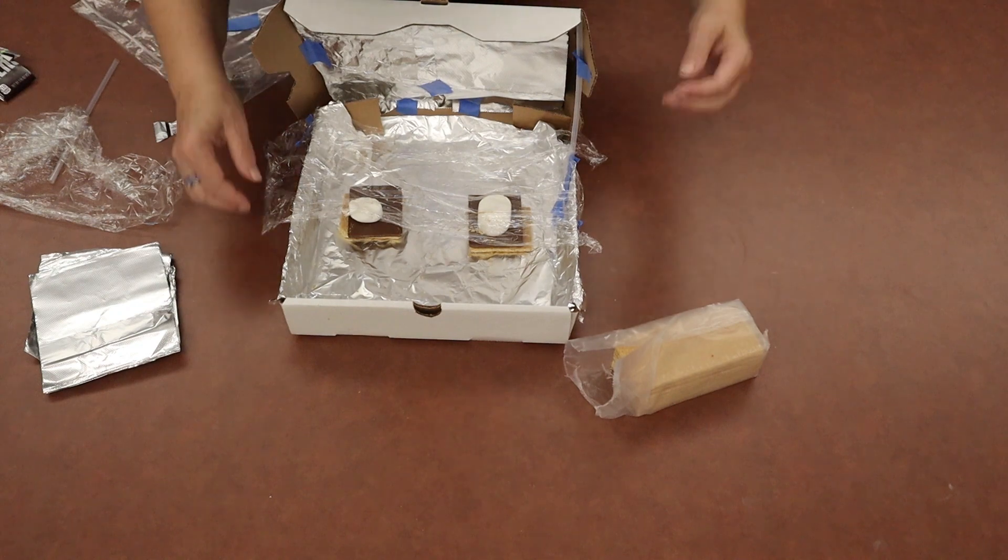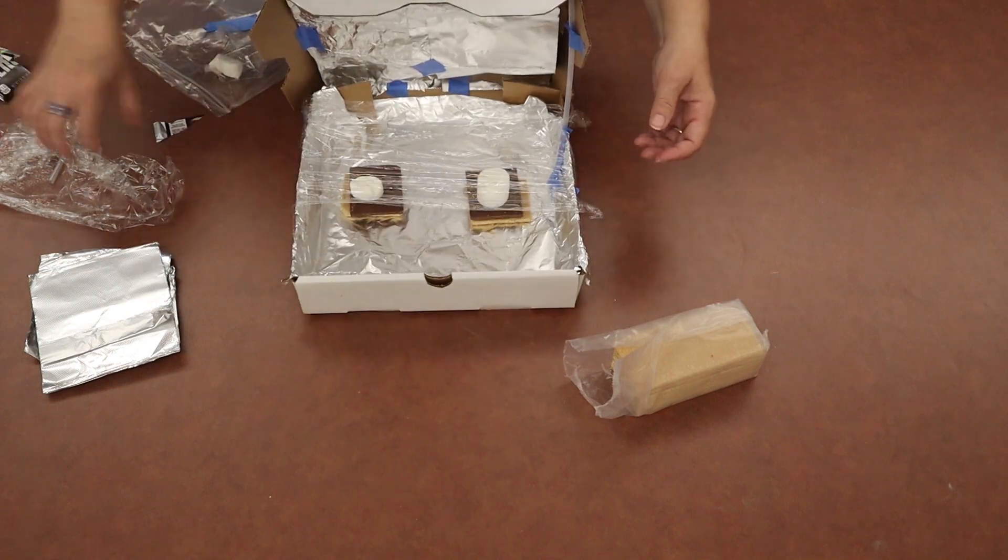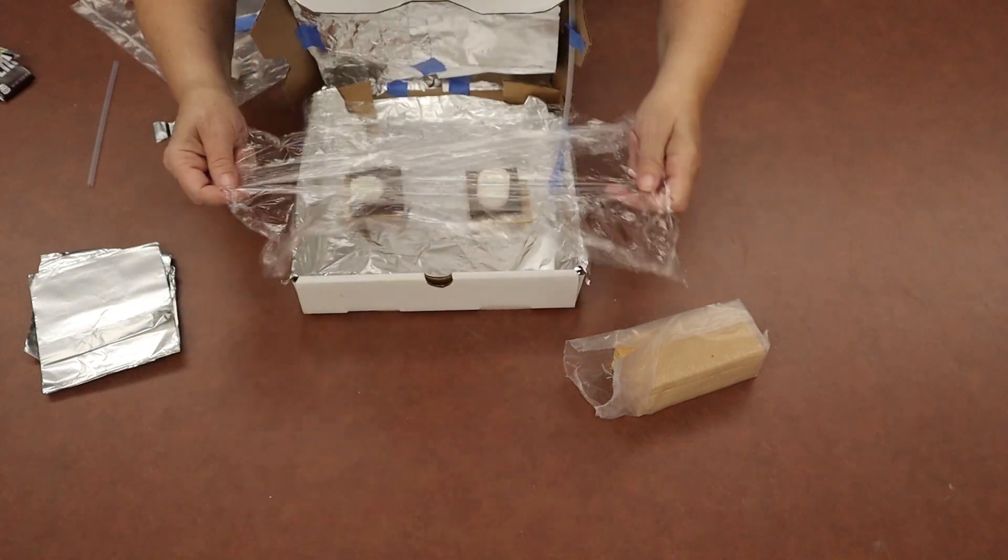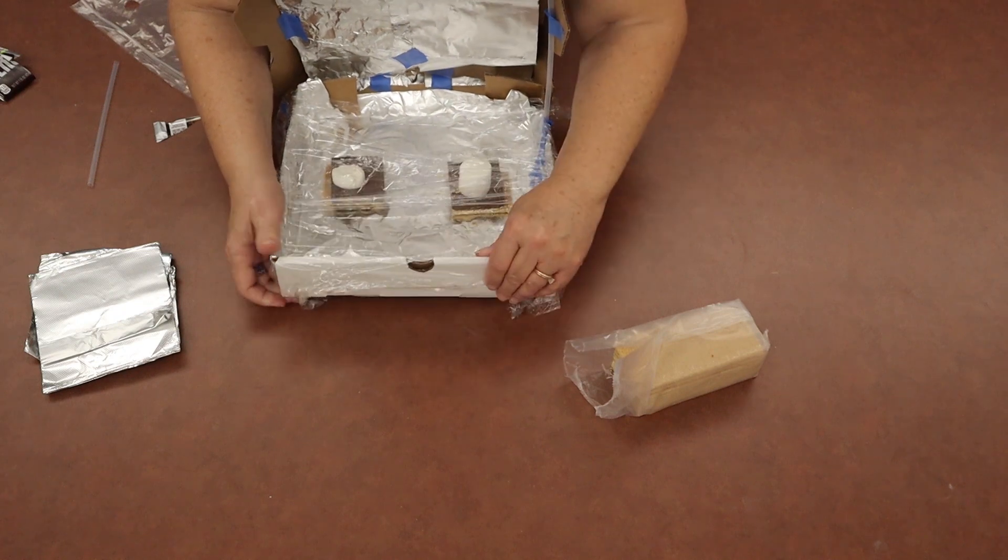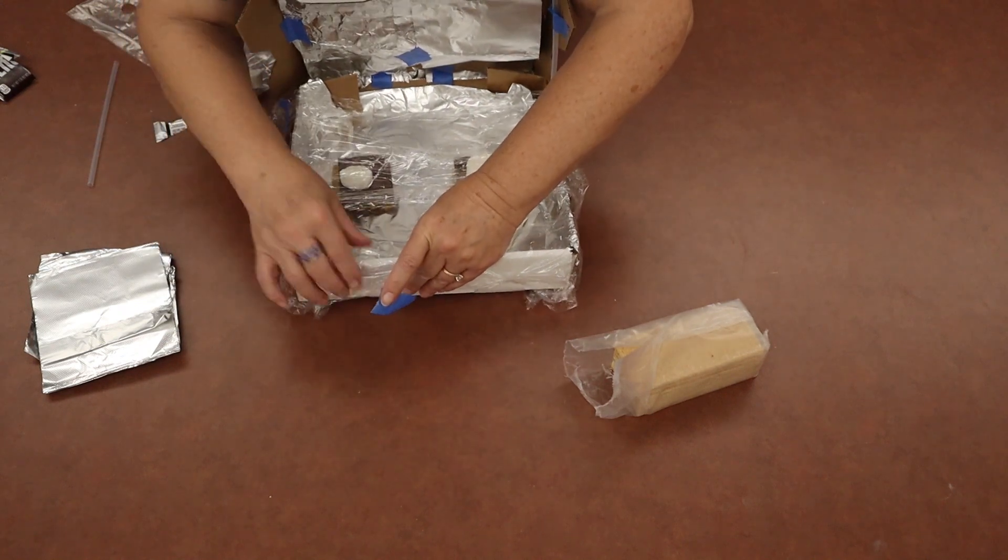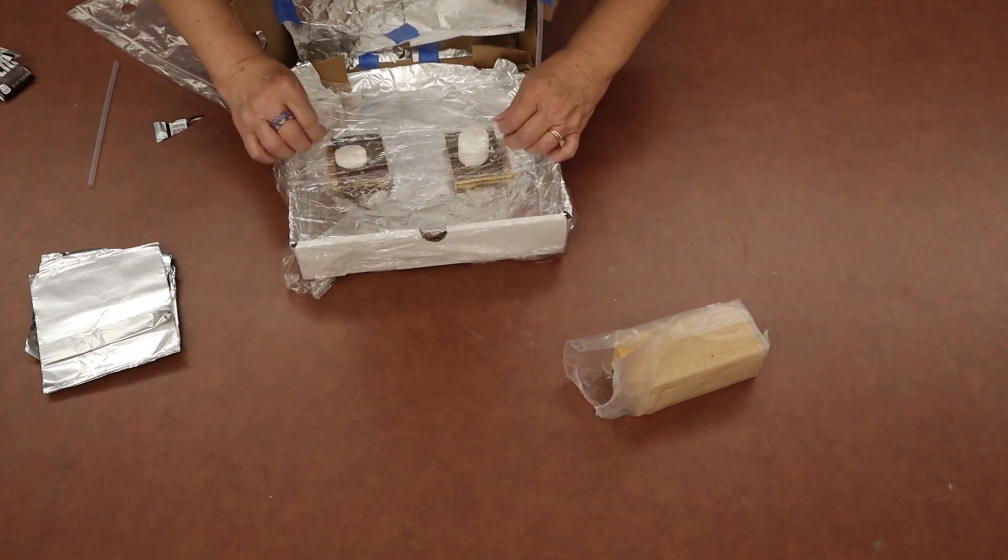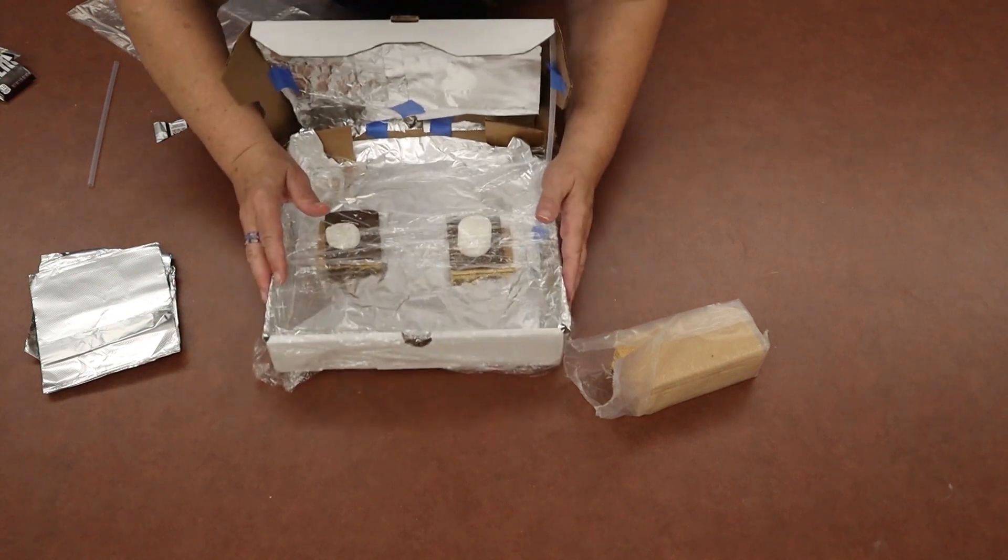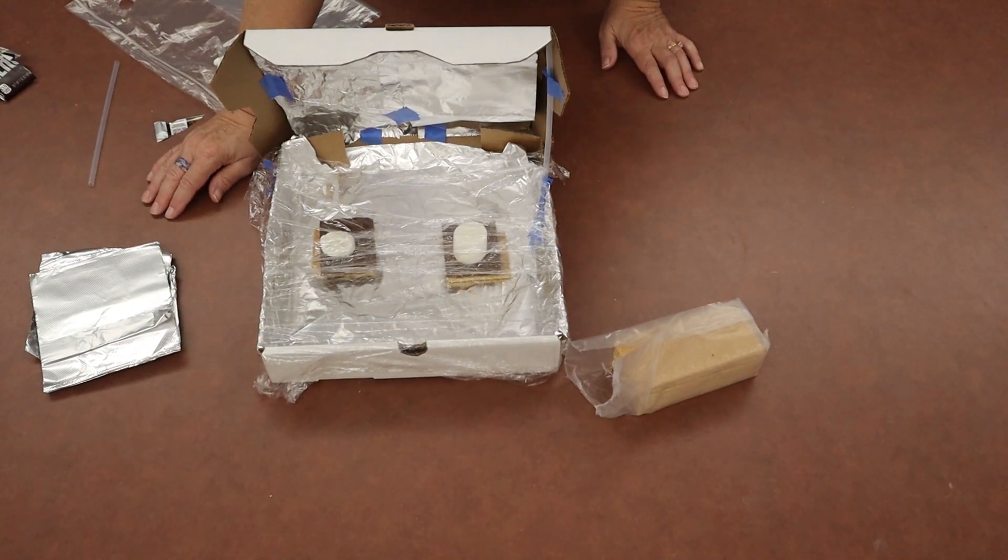Once you've done that, make sure your saran wrap's good and tight. Add your second piece of saran wrap, plastic wrap, across your box. Tape it down so it's secure, so it's going to keep the heat in. It's okay if it's not taped down here, but it'll stick to the other piece. Then you will take it outside.